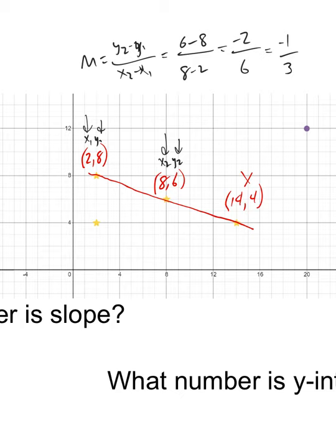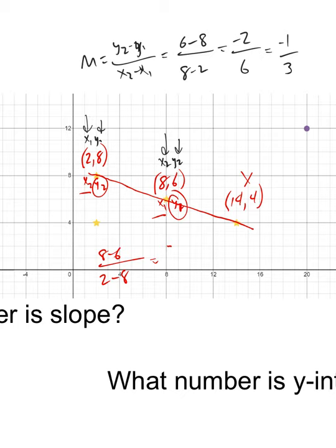That gives us -2/6, or -1/3. Had I reversed the labeling — making (2,8) the x2,y2 — I'd get (8-6)/(2-8) = 2/(-6), which is also -1/3. So it doesn't matter which point you call 'one' or 'two' — you get the same slope either way.